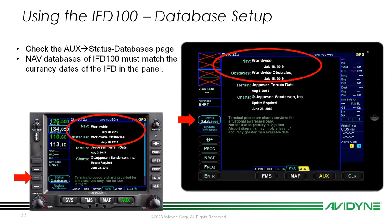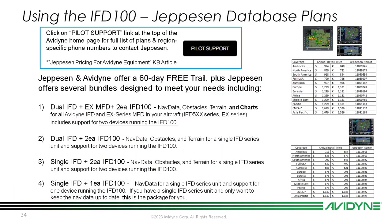To verify that your databases match, just like on your panel-mounted IFD you have a database status page. That's in the AUX page system tab under status/databases. Just like the panel-mounted IFD, if any cycles are shown in yellow they are either expired or not yet current. Current databases always show up in white letters. Check that both match and double-check the cycles.